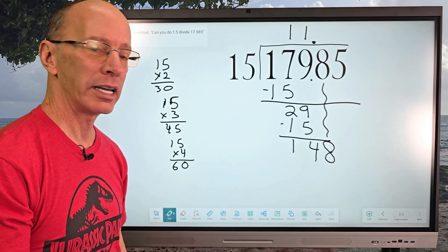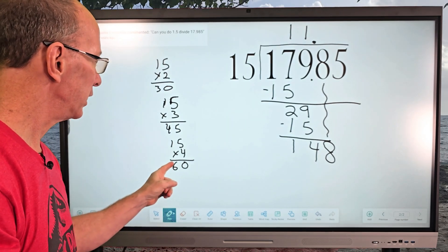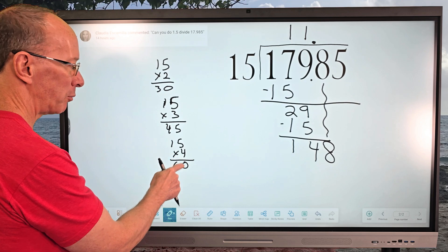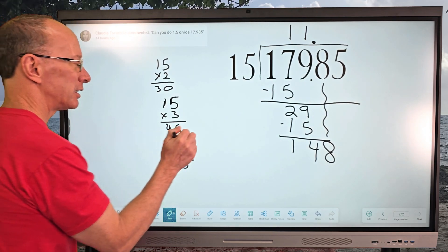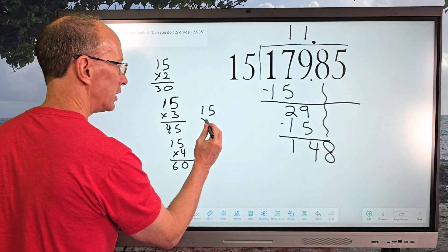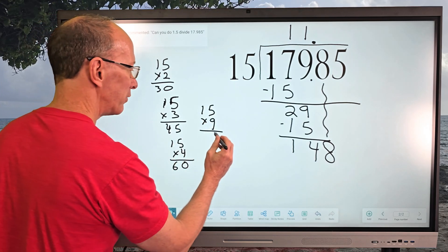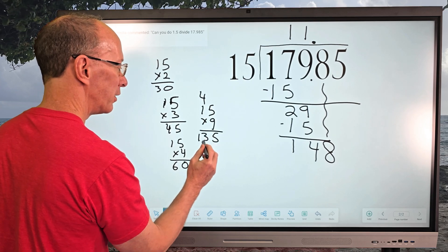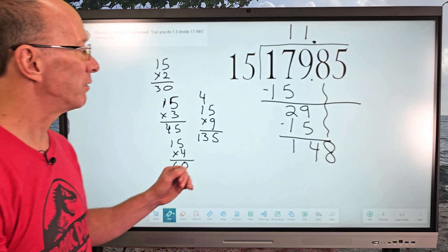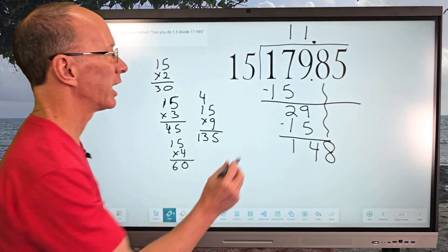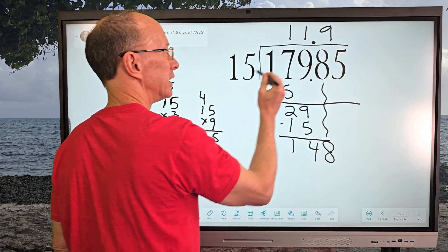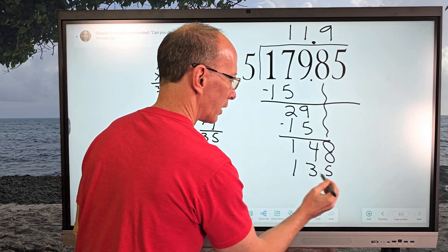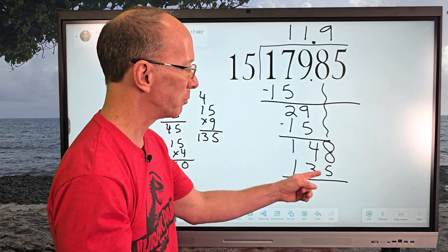Now we have to think: how many times does 15 go into 148? Let's try 9. 15 times 8 would be 120, so let's see what 9 gives us. 15 times 9: 9 times 5 is 45, put the 4 up, then 9 times 1 is 9 plus 4 equals 13, so 15 times 9 is 135. That's the right answer, so I put 9 right here and write 135 below.